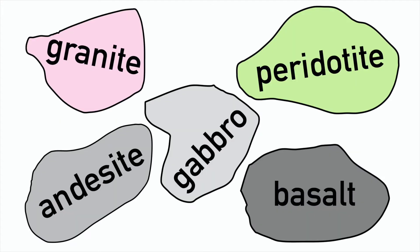We're going to take five common igneous rocks — granite, peridotite, basalt, andesite, and gabbro — and label the minerals you'd expect to see.